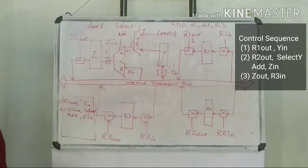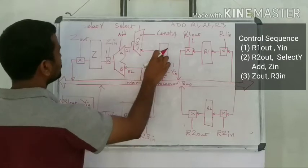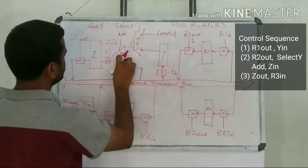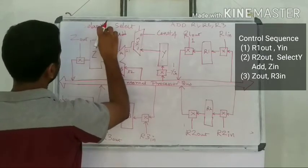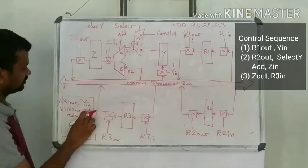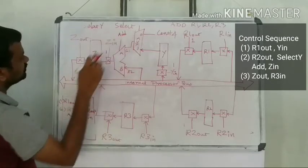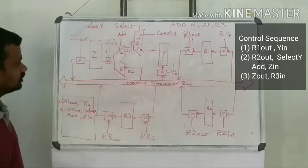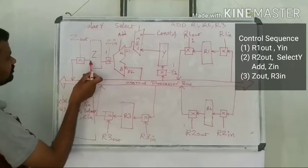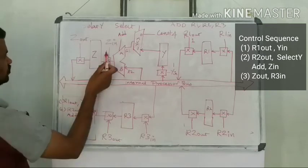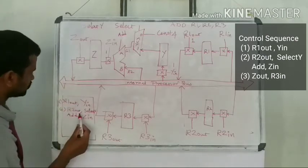In the second clock cycle, the active control signals are: R2-out, select Y, ADD, and Z-in. R2's content reaches the internal processor bus and the B input of the ALU. Y — which holds R1 — is selected to the A input. The ALU performs addition, and by activating Z-in, the sum is stored in the Z register.